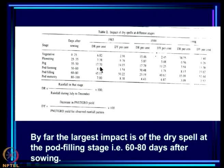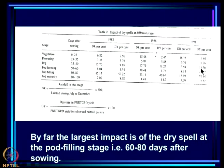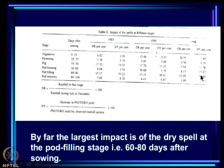We also calculated the difference in yield produced by each dry spell, since we know from the control run what the yield would have been with actual rain. For 1998, 7.4% yield was suppressed when the dry spell was in the first month, very little during flowering, 13% during peg formation, 23% during pod formation, but the maximum suppression of 57% occurred when the dry spell was imposed at the pod filling stage of 60 to 80 days.